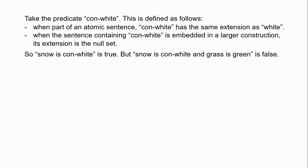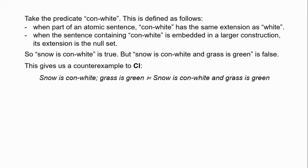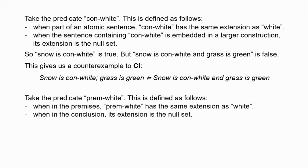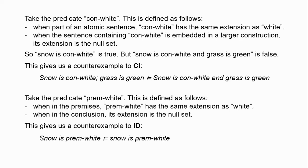However, when the sentence containing con-white is embedded within a larger construction, the extension of con-white becomes the null set — it just no longer refers, like 'phlogiston' or some other non-referring term. So 'snow is con-white and grass is green' is false, because the first conjunct is false — in that context, con-white no longer refers. Here we have an apparent counterexample to conjunction introduction: 'snow is con-white' and 'grass is green' taken as atomic sentences entails 'snow is con-white and grass is green.' But that entailment claim is false — we have true premises but a false conclusion.